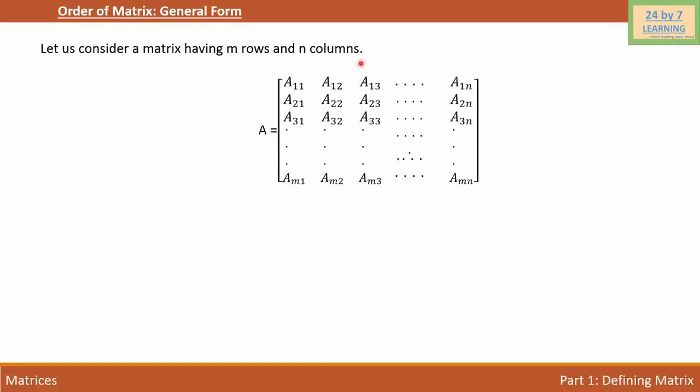As you can see, A is a matrix with elements A11, A12, A13, all the way to A1N, A21, A22, A23, all the way to A2N. And the last row is AM1, AM2, AM3, all the way to AMN.